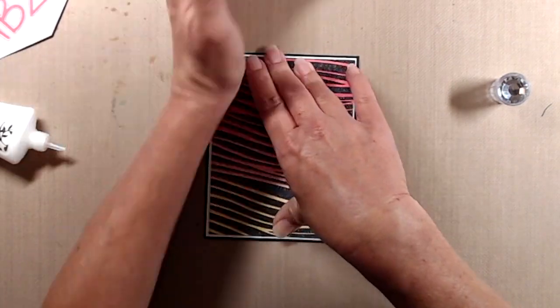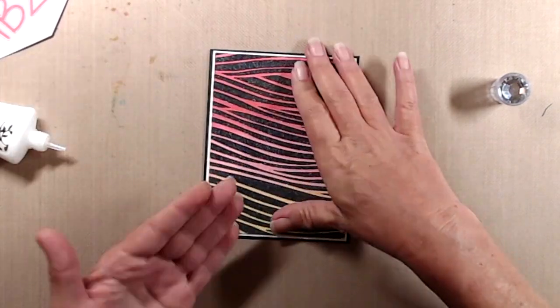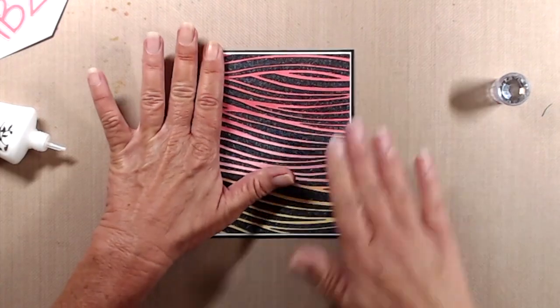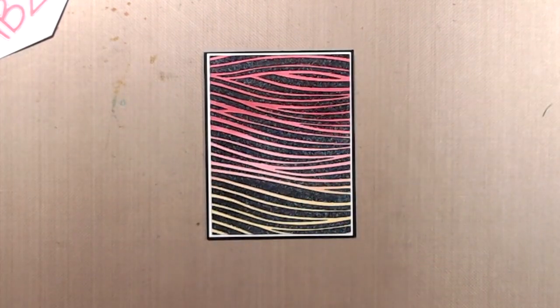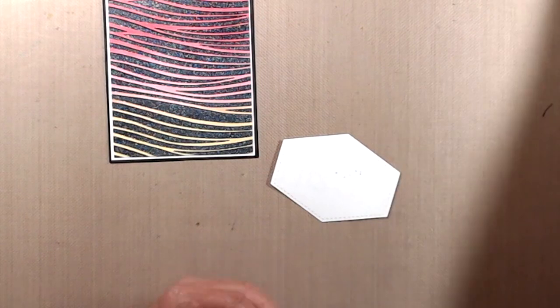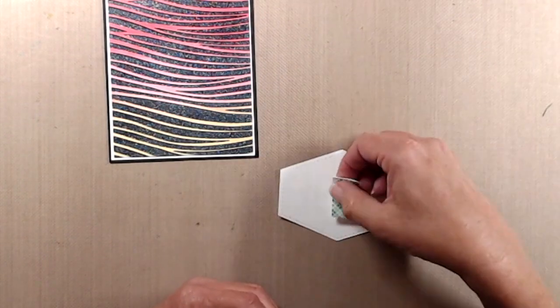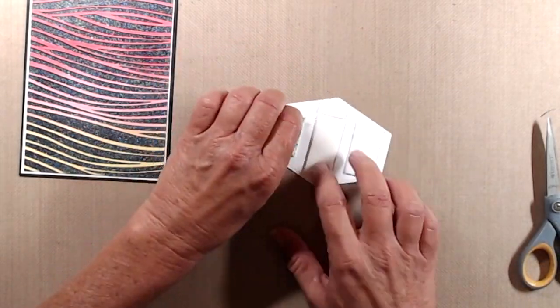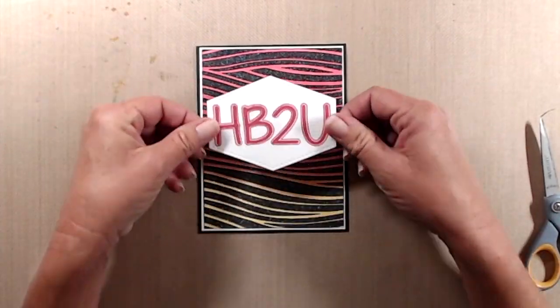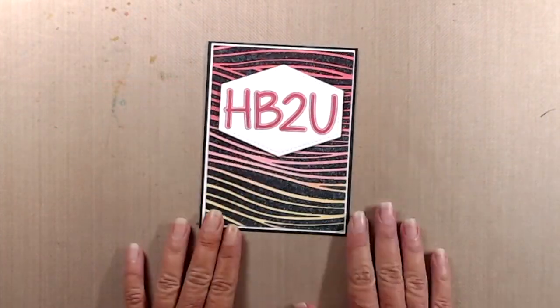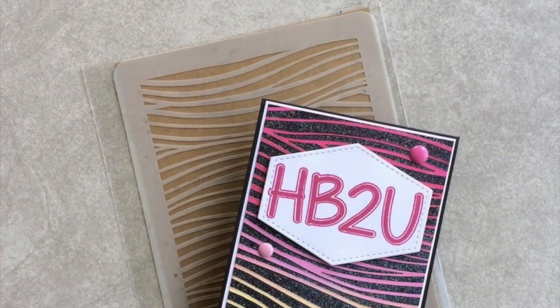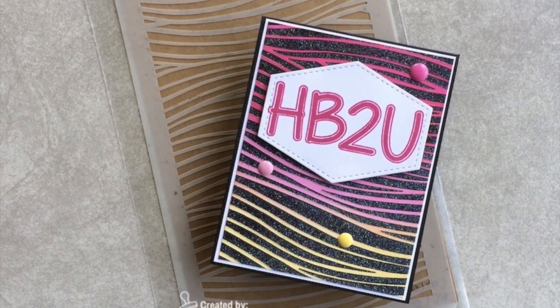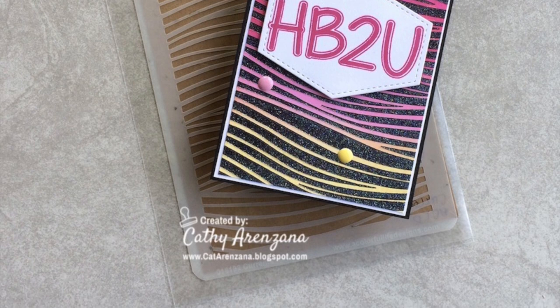Anyway, to finish up this card, I did trim that panel down to four by five and a quarter and used liquid glue to adhere it to a piece of white cardstock that was cut slightly larger, and then I adhered that to the front of a top folding black note card. For the sentiment, I just used a little bit of foam tape on the back side of that and adhered that in place. And then off camera, I ended up adding a couple of enamel dots just to gussy that card up a little bit.